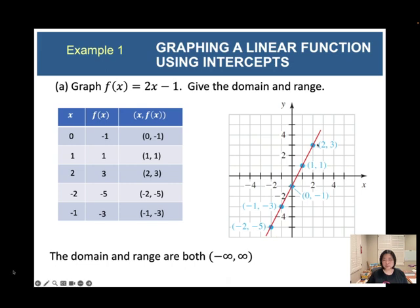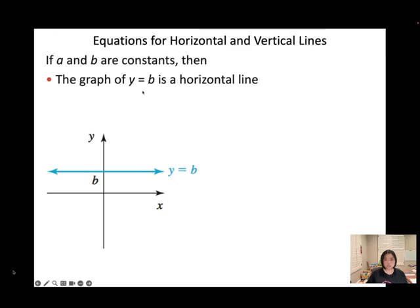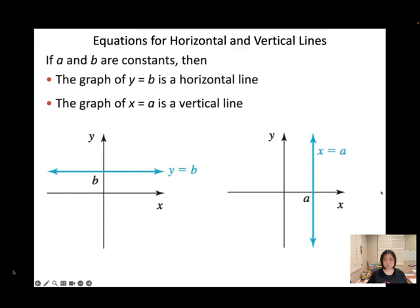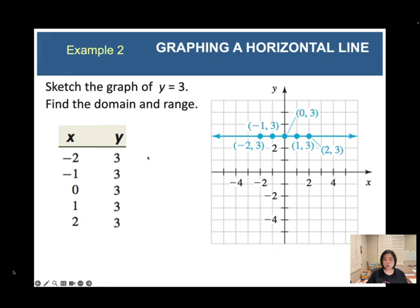Since this is a linear equation, the domain and the range are both from negative infinity to positive infinity. For horizontal and vertical lines: if a and b are constants, the graph of y = b is a horizontal line, and the graph of x = a is a vertical line. For example, sketch the graph of y = 3 — that will be a horizontal line at 3.